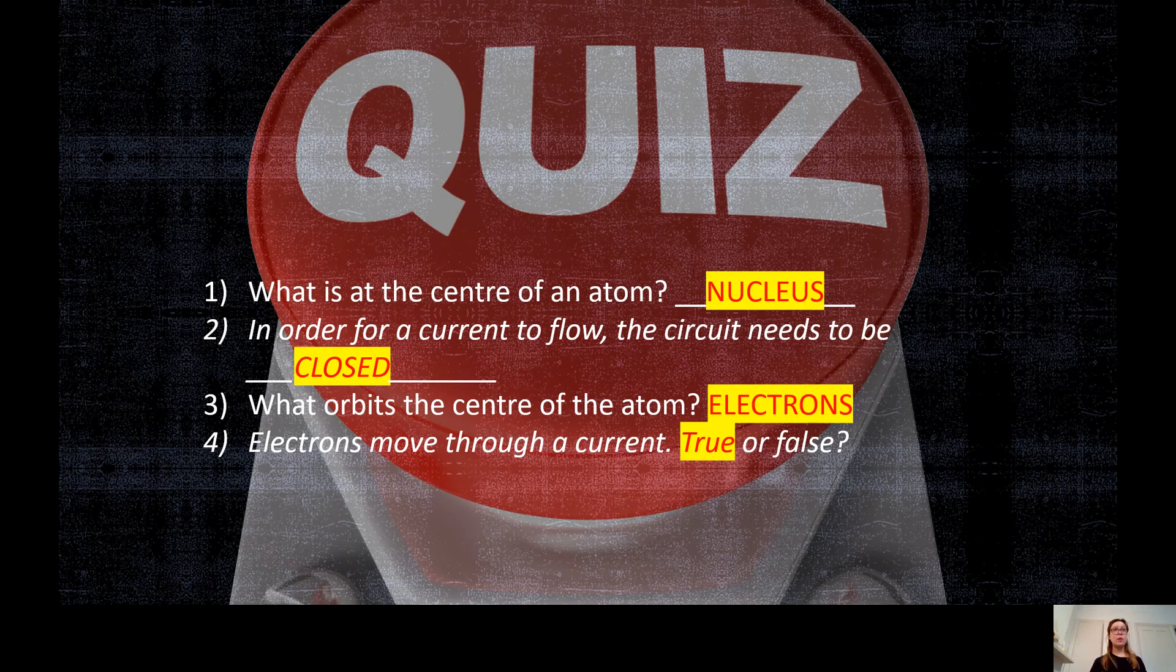Question three what orbits the centre of the atom? Electrons. So the electrons spin around the centre of the atom, spin around the nucleus. And question four electrons move through a current. This is true. Okay well done. Let's move on to reviewing some vocabulary that you would have learnt in year three.